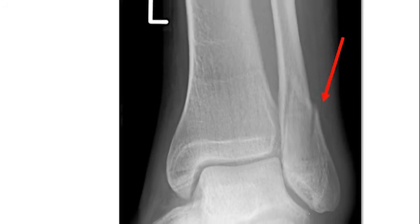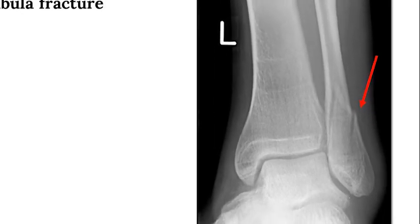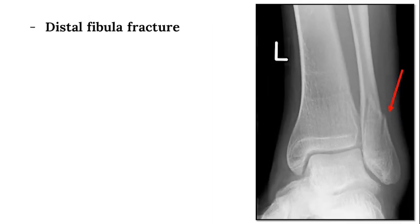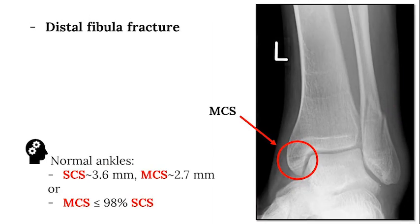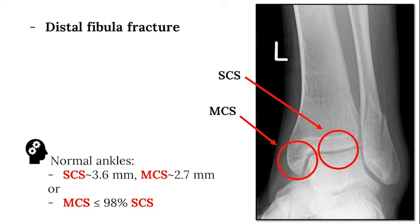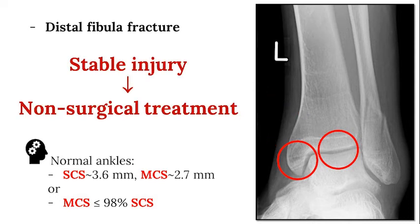In this example, there is a fracture of the distal fibula. However, the medial clear space appears normal — less than the superior clear space — so no medial injury is present. Therefore, despite the fracture to the fibula, this is a stable injury that can be treated without surgery.